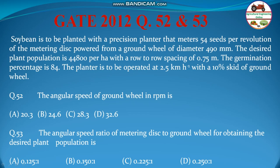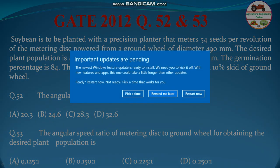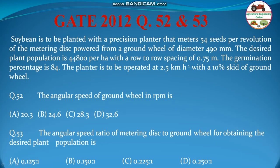The planter is to be operated at 2.5 km per hour with a 10% skid of the ground wheel. Question one asks for the angular speed of the ground wheel in RPM — four options are given. Question two asks for the angular speed ratio of the metering disk to ground wheel for obtaining the desired plant population — options are 0.125, 0.15, 0.225, and 0.25 to 1.